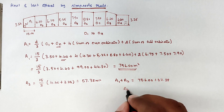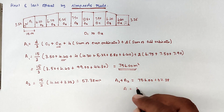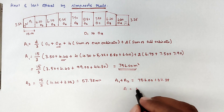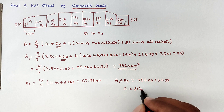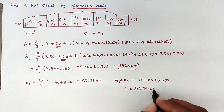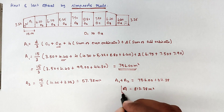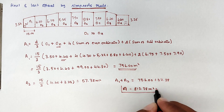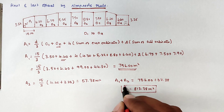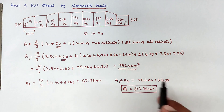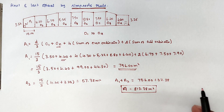The total area is 813.38 square meters. This is the method using Simpson's rule combined with the trapezoidal rule. We will see the next problem in the next video. Thank you.